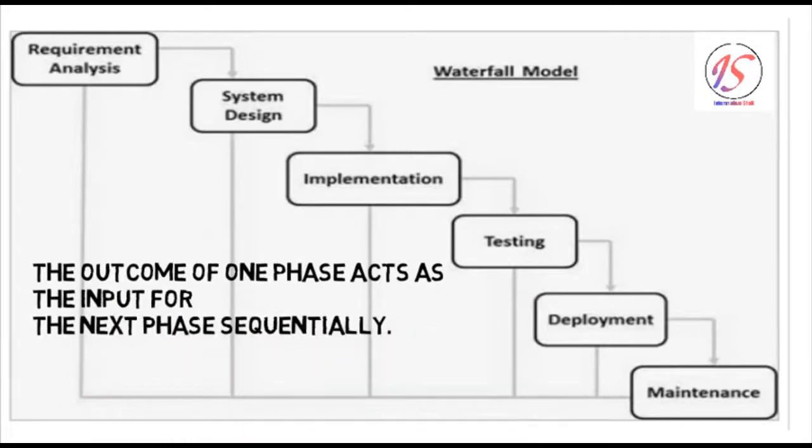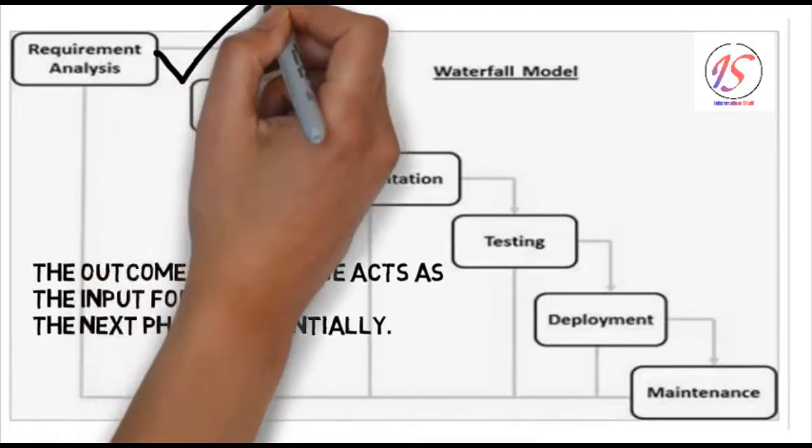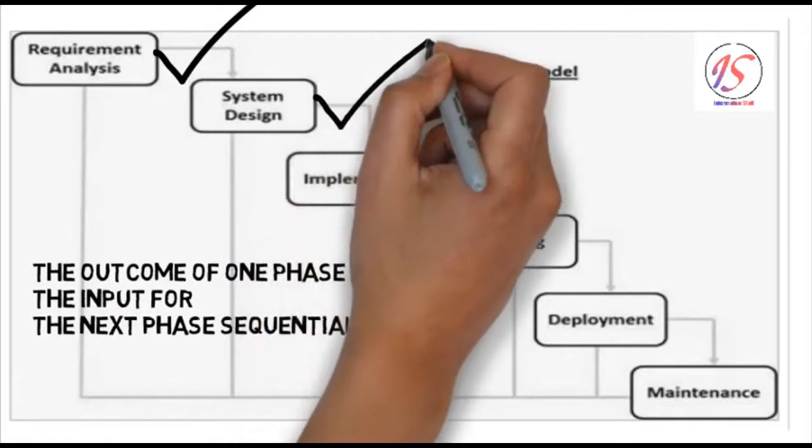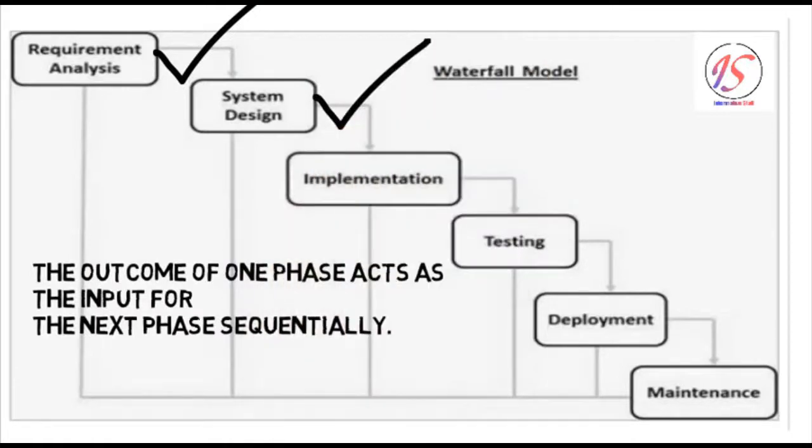The sequential phases in the Waterfall model are: requirement gathering analysis, system design, implementation, integration and testing, deployment of system, and then maintenance.